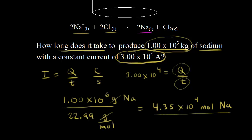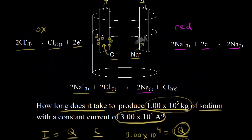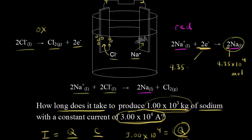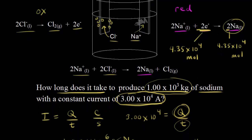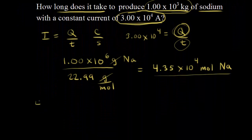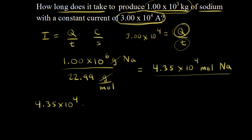Now, how does that help us find charge? We can relate moles of sodium to moles of electrons using the half-reaction. We're trying to make 4.35 × 10⁴ moles of sodium. The mole ratio of electrons to sodium is two to two, so we need the same number of moles of electrons: 4.35 × 10⁴ moles of electrons.